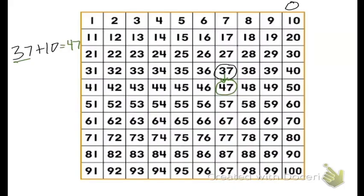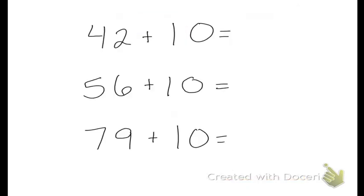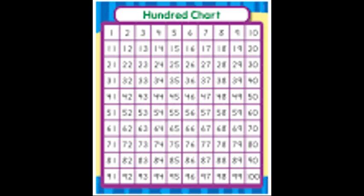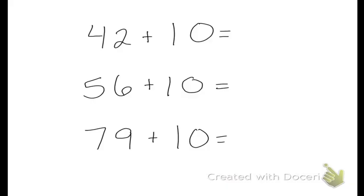What if we use that same kind of pattern to solve another adding 10? Here we have 42. I want to figure out 42 plus 10. We know I could count up 10 squares or I could end up at the one below, the number below. So if I'm thinking to myself, what number on the 100 chart is below 42? Well, that's 52. So 42 plus 10 equals 52.